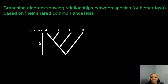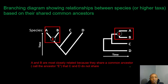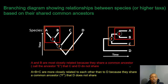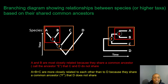Now let's look at branching diagrams showing relationships between species based on shared common ancestors. There are two ways we can look at phylogenetic trees: one where time moves in one direction and another where time moves to the right. They both represent the same thing.